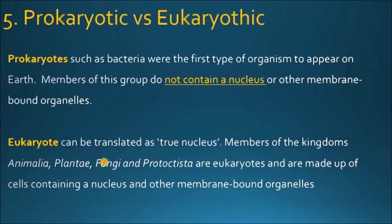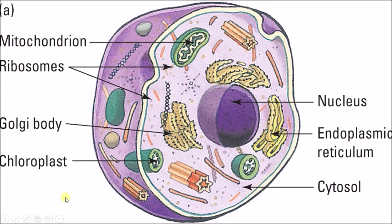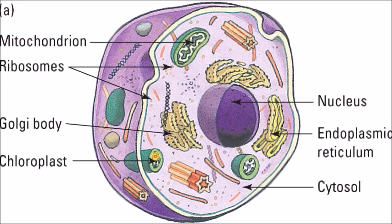Animalia, plantae, fungi, and protista — including you and me. So a eukaryotic cell, in this case a plant cell, which is also a eukaryote, is much more complex and organized. We have things like mitochondria, ribosomes as well, Golgi body, chloroplasts — which are responsible for gathering light from the sun and carrying out photosynthesis — and a membrane-bound nucleus. That's really, really important.